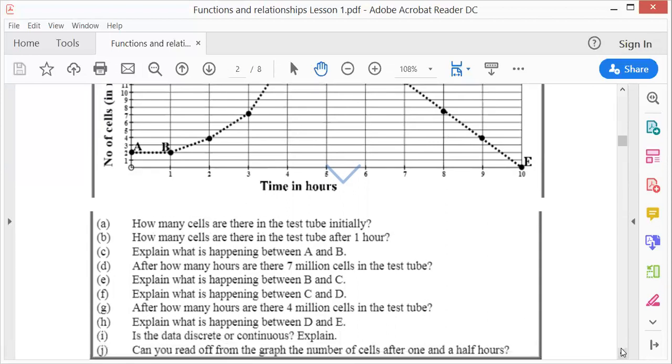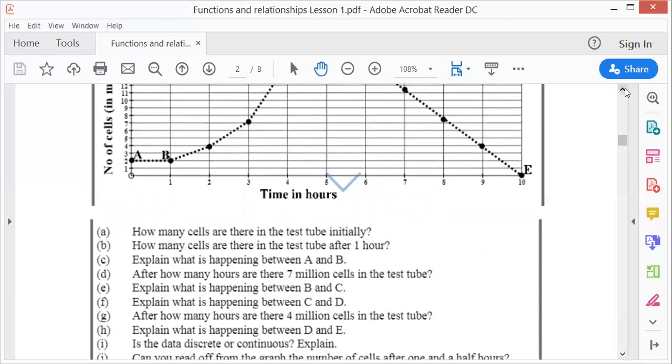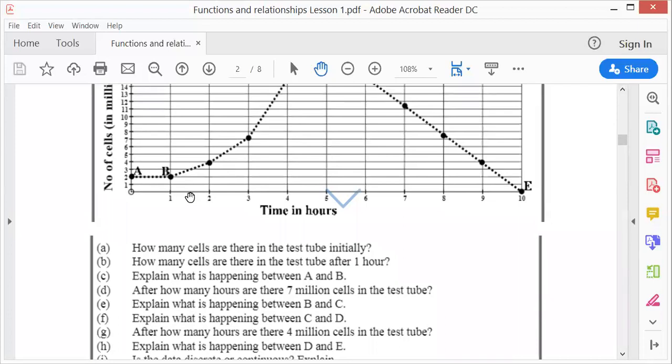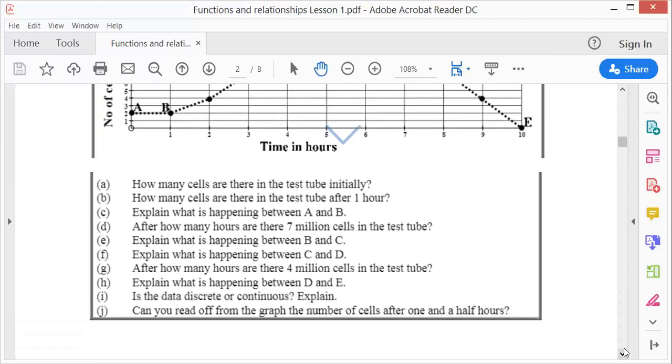Is the data discrete or continuous? We already said it is discrete because we have dots. And can you read off from the graph the number of cells after one and a half hour? It will be difficult, people. It will be difficult because, remember, they took measurements every hour. So it will be difficult to get an exact answer. You can judge more or less. Hour and a half is about there, so maybe approximately 3 million. But you can't say exactly. You have got to say approximately 3 million.